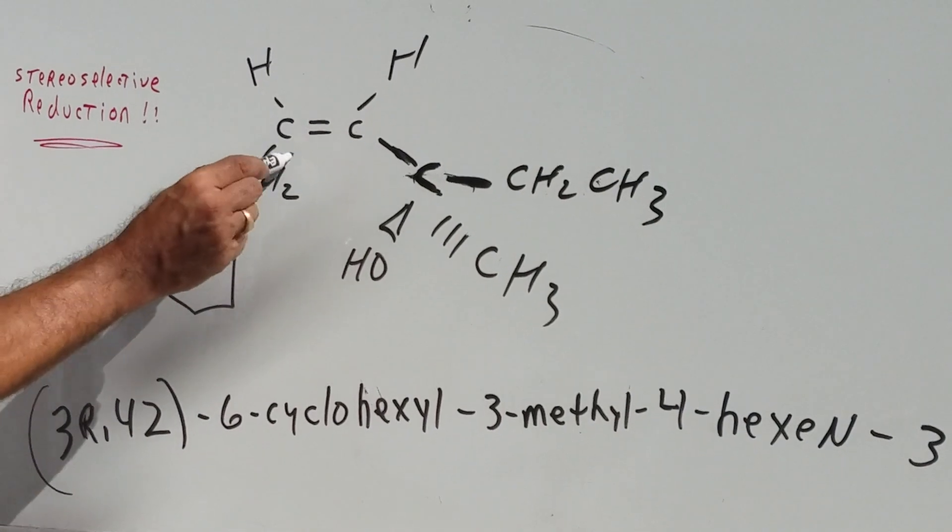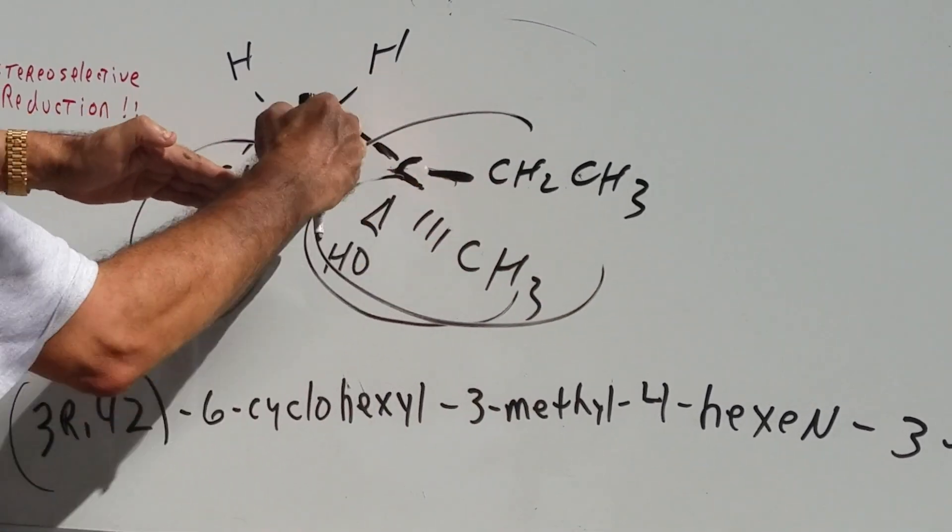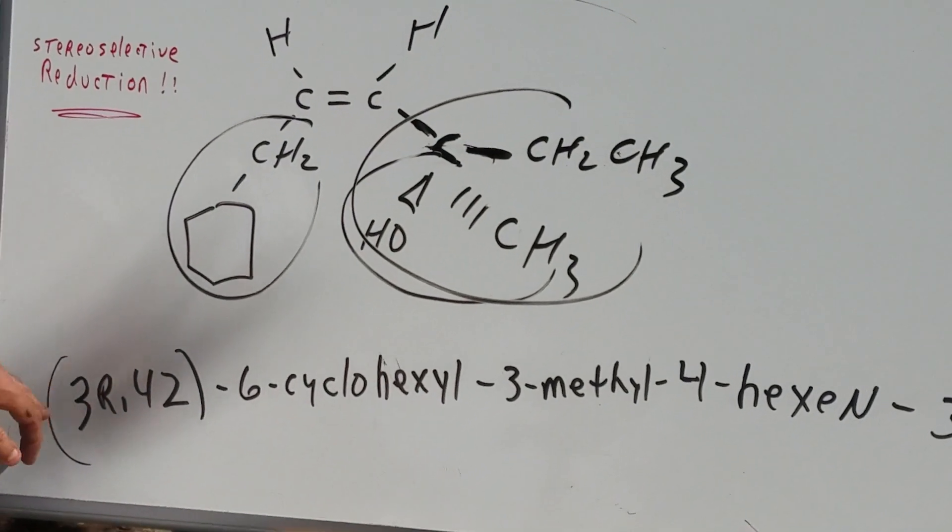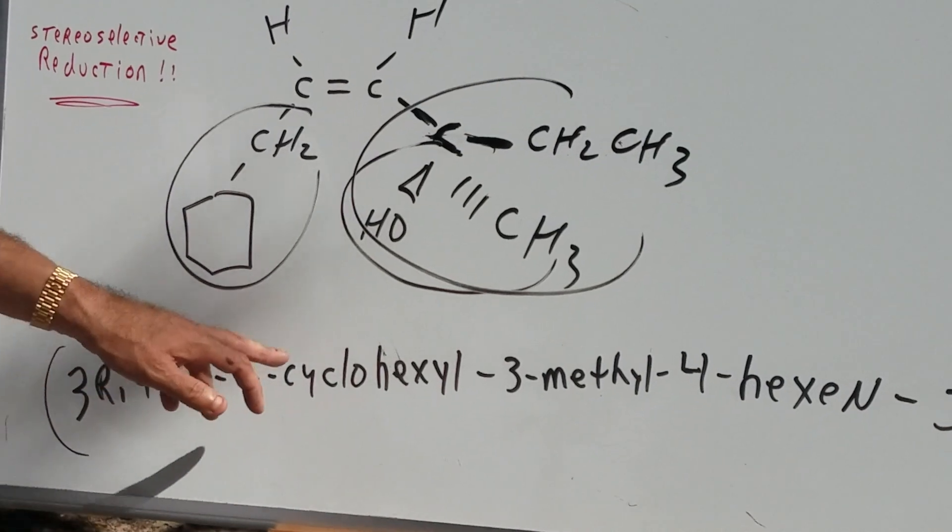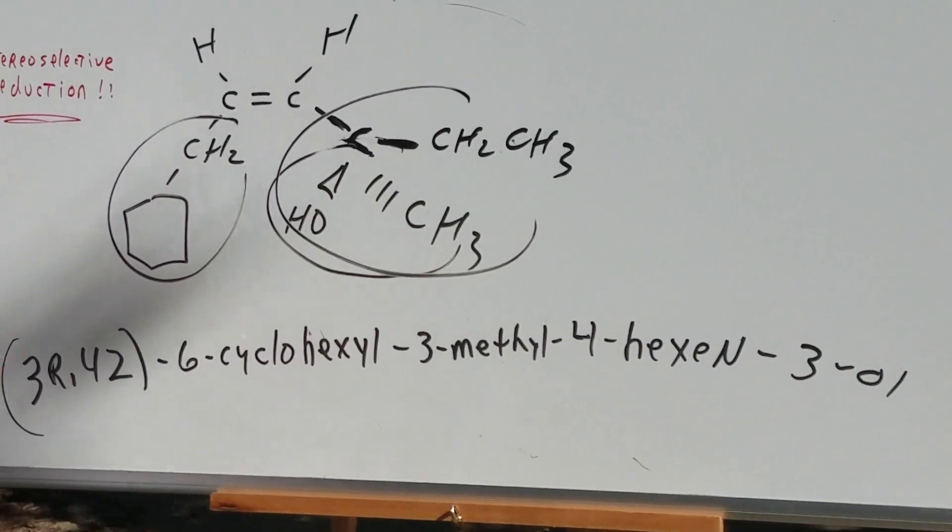Why is it a Z? Because this group and this group down here are both highest priority amongst the double bond. So we get 3R, 4Z, 6-cyclohexyl-3-methyl-4-hexin-3-ol.